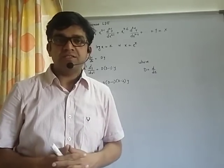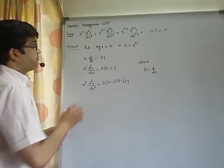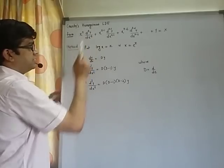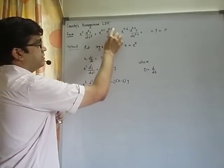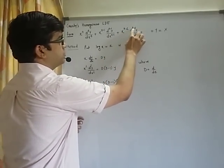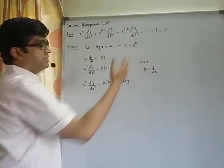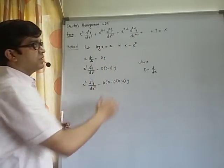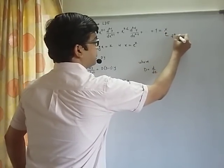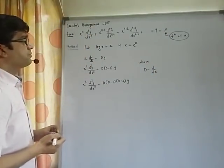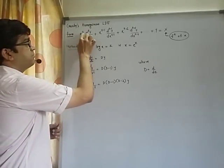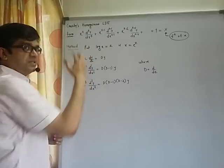First step, let us understand the format. The first term has x raised to n into nth derivative plus x raised to n minus 1 into n minus 1th order derivative. Then x raised to n minus 2 into n minus 2nd order derivative and so on. It goes on till y equals some function of x. Note one more interesting fact: whatever is the power of x, same is the order of derivative.